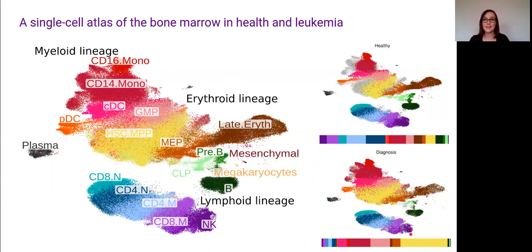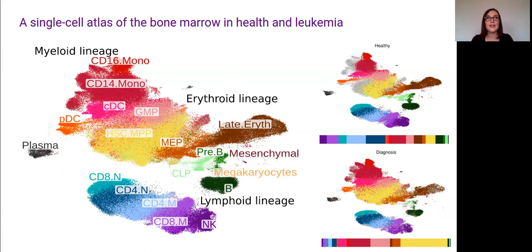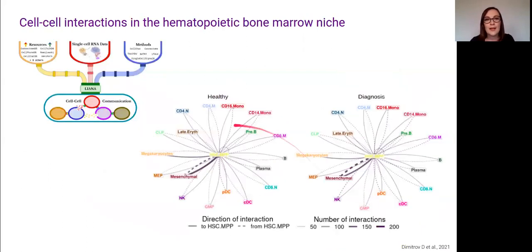We then asked how these HSCs are communicating with other cell types in the bone marrow and how that might change at the onset of AML. We do this by looking at the expression of genes that code for ligands and receptors that are known to interact with each other, and looking at what pairs of cell types are expressing these ligand-receptor genes. We used a tool called Liana, which runs multiple different methods for predicting cell-cell interactions and gives an aggregate consensus score for each interaction, so it avoids calling too many false positives.